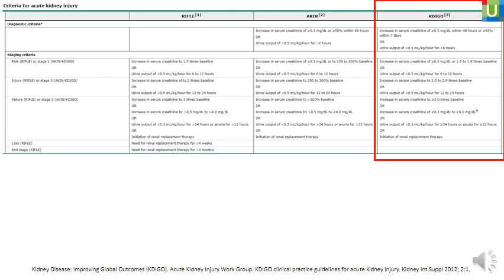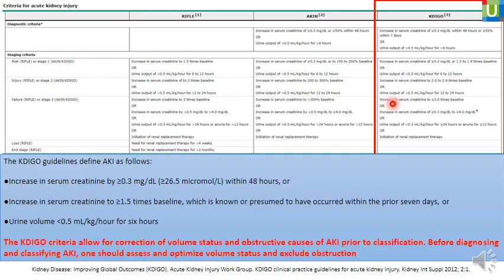Regarding acute kidney injury, we have multiple known classifications: the RIFLE criteria, the AKIN criteria, the Acute Kidney Injury Group, and the most updated one, the KDIGO criteria — all based on serum creatinine and urine output. RIFLE is an abbreviation: R for Risk, I for Injury, F for Failure, L for Loss, and E for End-stage renal disease. This was simplified in AKIN and KDIGO to only three stages: stage one, stage two, and stage three.